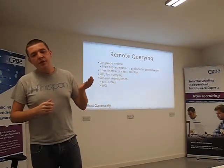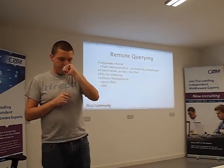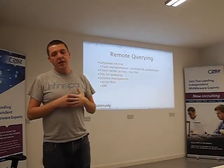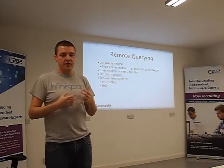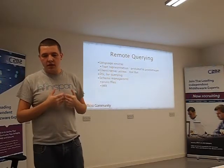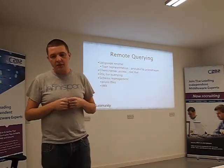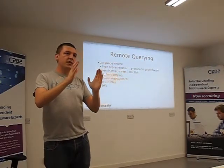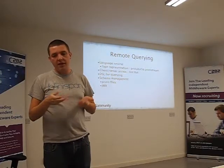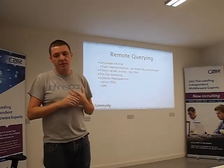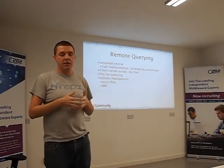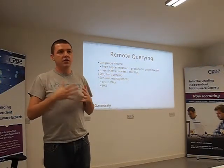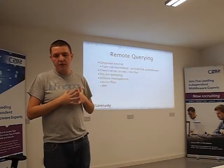We also needed to define a domain-specific language for the querying API, so that it can be built in both Java and C++. We came up with a SQL-like DSL. An important thing is that now that we have a schema, we need to manage it — define new object types, upload them so the InfiniSpan ecosystem is aware of them, and define which fields to index. We do that through JMX and also through JBoss Operations Network (RHQ).